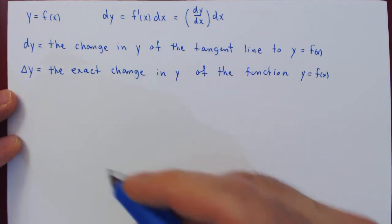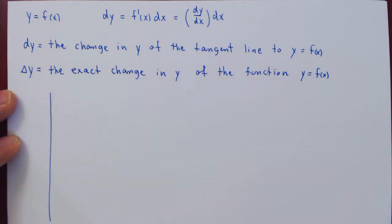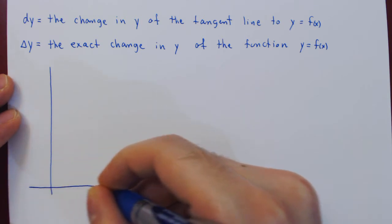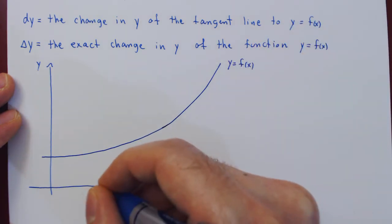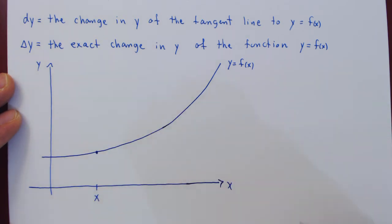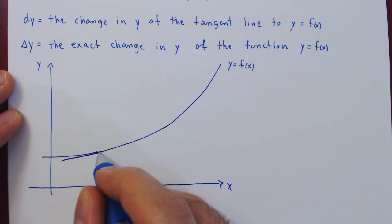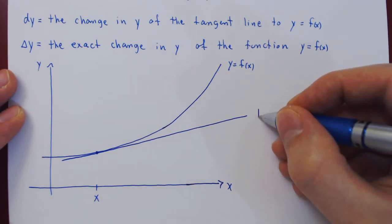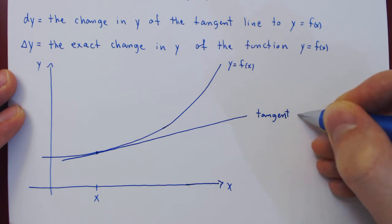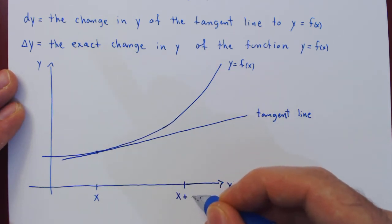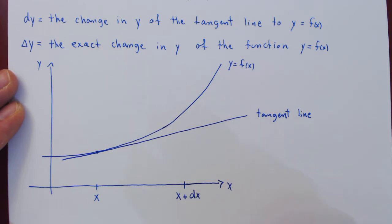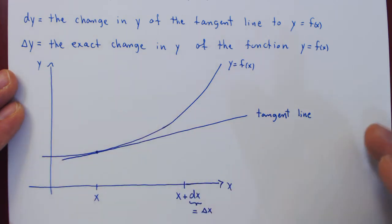Let's look at the sketch of an arbitrary function in the xy plane. We pick an arbitrary point x, and at this point we consider the tangent line to the function. Now let's add to x a small change in x — say x plus dx — and since x is the independent variable, dx is equal to delta x. But is the same true of the dependent variable y? Well, let's look.